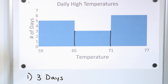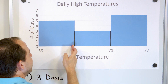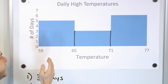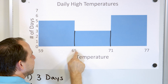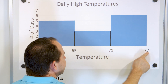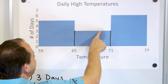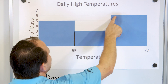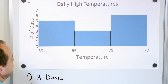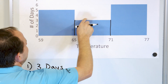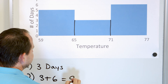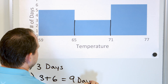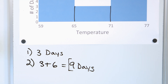Question number two: for how many days was the temperature 65 degrees or above? We have a bin from 59 to 65, but we want 65 and above, so we go from 65 all the way to 77. We have three days in the 65–71 window and six more days in the 71–77 range. We add three plus six to get nine days when the temperature was 65 degrees or above.